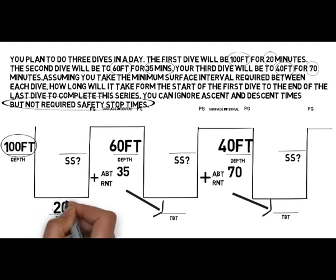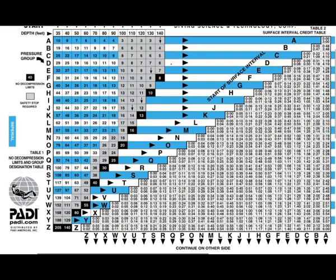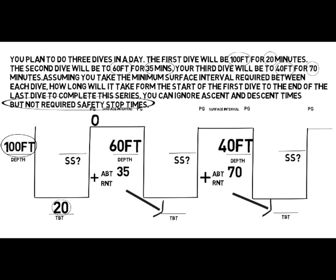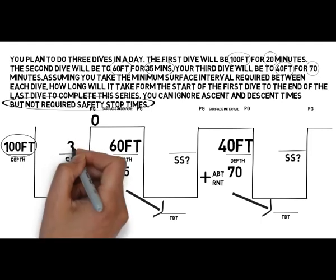The first dive is 100 feet for 20 minutes. We're going to find out what pressure group we end up in and note down whether it's a dive that has a required safety stop. 100 feet for 20 minutes puts us in pressure group O. Any time you're in a gray box or a black box, the safety stop is required — so in this situation it is a required safety stop. We note down the three-minute safety stop, leaving us at pressure group O with a three-minute safety stop required.